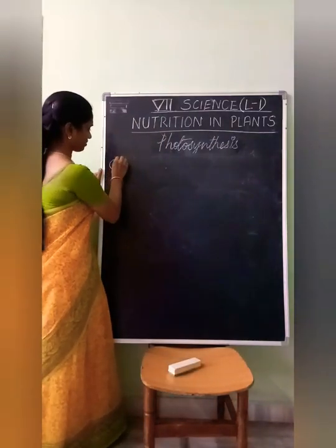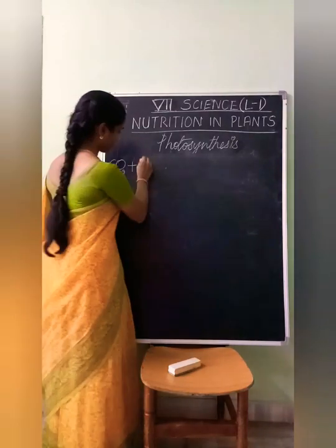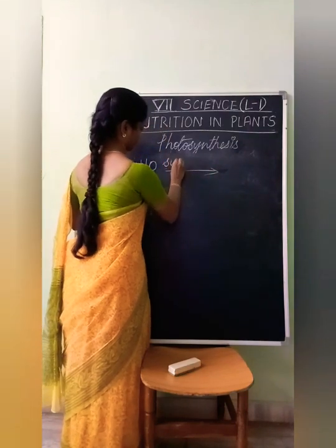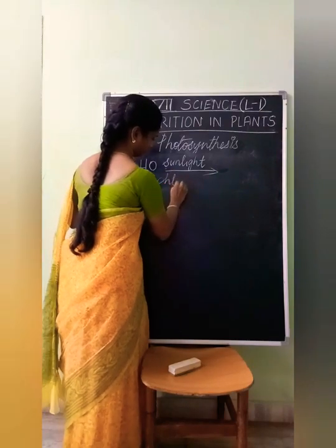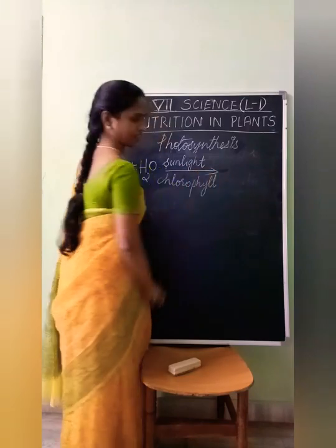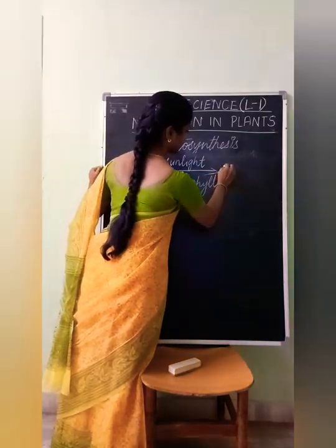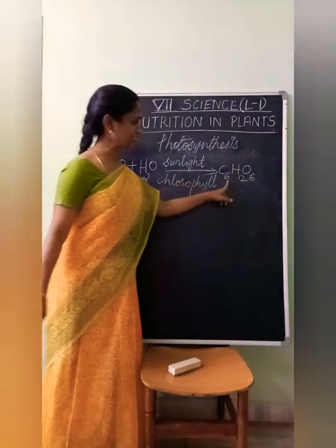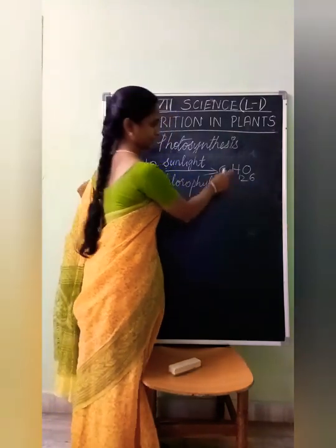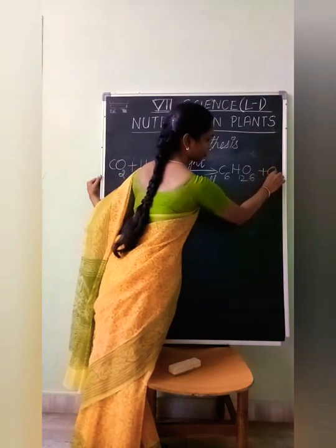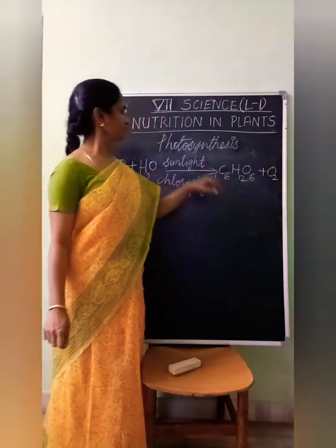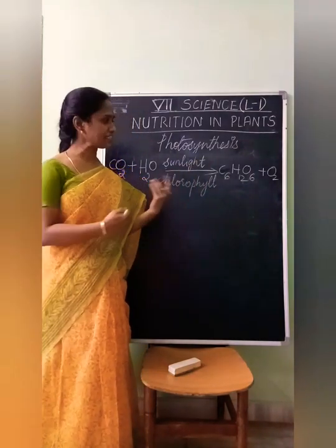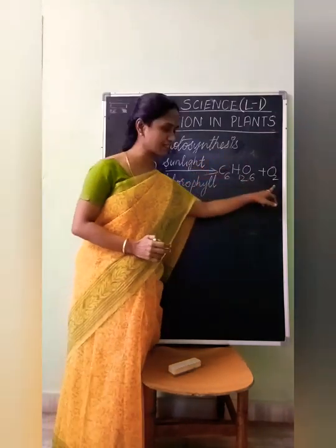The green plants use carbon dioxide from the air and water from the soil, and in the presence of sunlight and chlorophyll, they prepare food material. This food can be written as C6H12O6, which is glucose. Another product also released during photosynthesis is oxygen. The by-product of photosynthesis is oxygen, which is released into the air.